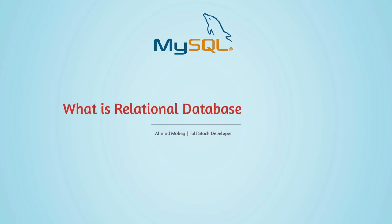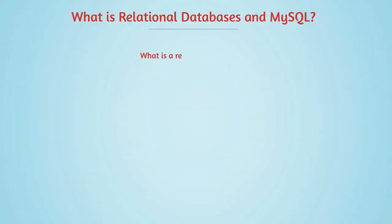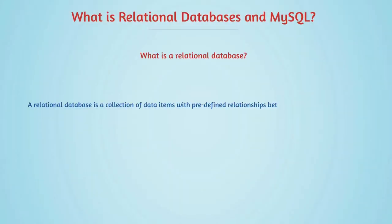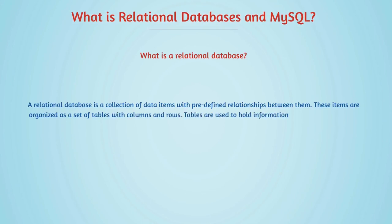Let's start with what is a relational database and what is MySQL. A relational database is simply a collection of data items with predefined relationships between them. These items are organized as a set of tables with columns and rows. Tables are used to hold information about the objects to be represented in the database.